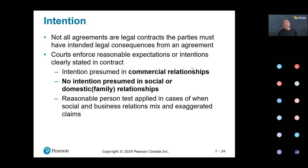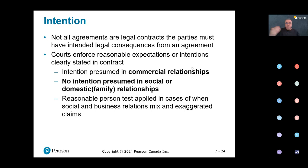What is key is that in social relationships or domestic relationships, there's a presumption of no intention. Social relationships include professional and client, religious leader and follower, instructor and students. Domestic or family relationships include parents and children, grandparents and grandchildren.